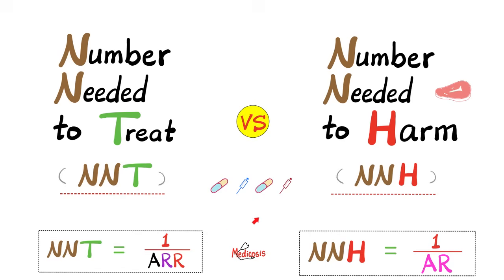In previous videos, we talked about the measures of central tendency, such as the mean, the median, and the mode. We talked about the measures of spread or dispersion, such as variance, standard deviation, quartiles, interquartile range, the Z-score, and more.